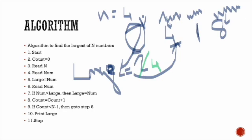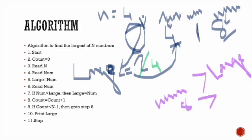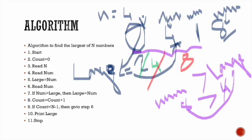Next, the number 8 is entered. Now check: is 8 greater than large? Yes, 8 is greater than 4. Now we have completed 3 iterations. The value of large is now changed to 8. The maximum value is 8.